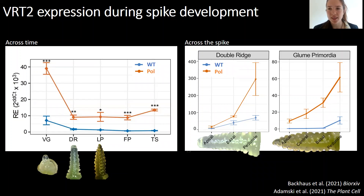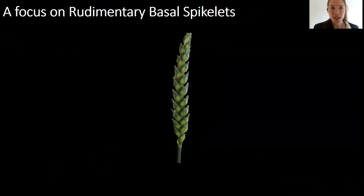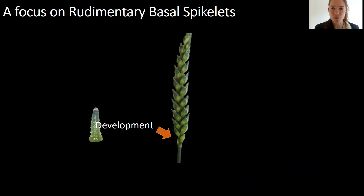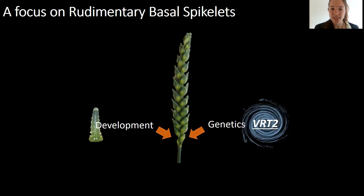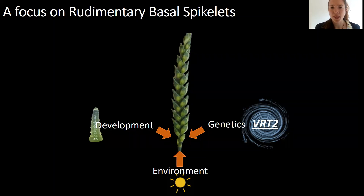So we're now hypothesizing that this higher expression of VRT2 in the base is what is holding back floral transition. And this is really key for my future research, where I would like to take a focus on rudimentary basal spikelets. I would really like to understand how spikelets at the base can develop differently to central ones, even though they're all in the same plant. For that I'm studying the development, the genetics that control this development, and now also the environmental effects that might play a role in rudimentary basal spikelet development.